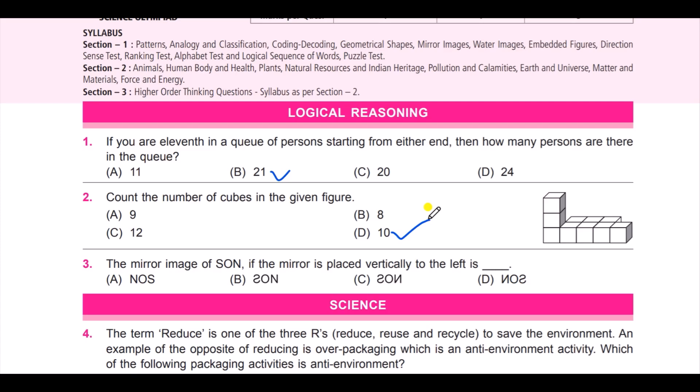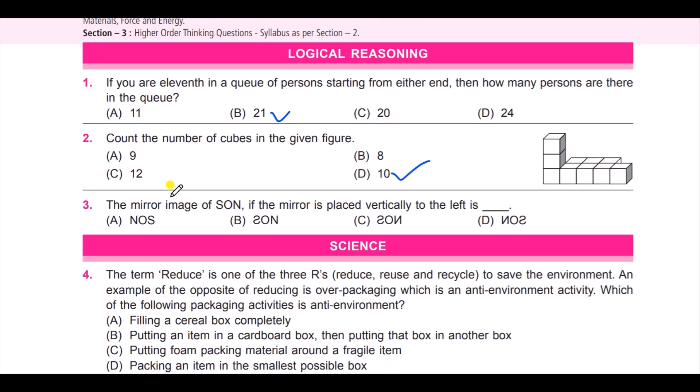And the answer is D: 10. Next question: the mirror image of SUN if the mirror is placed vertically to the left. Look at the options. What do you think will be the answer? It is D.